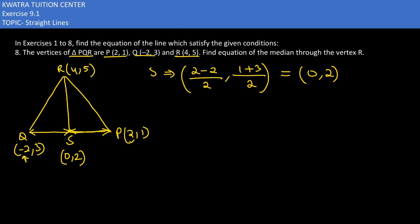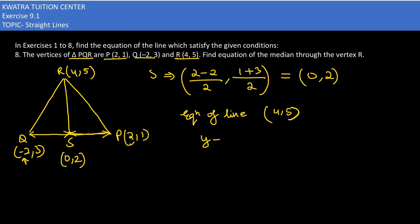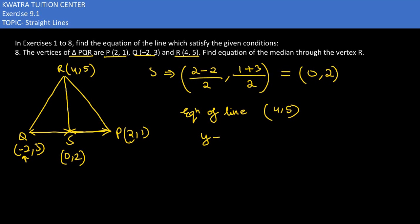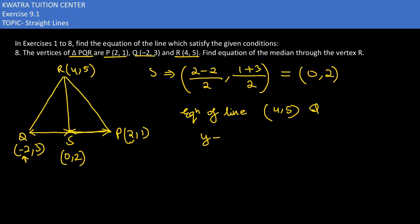We can easily find out the equation of the line. Equation of line, that's Y minus Y1. I have two points. One is (4,5) and the other one we have is (0,2).